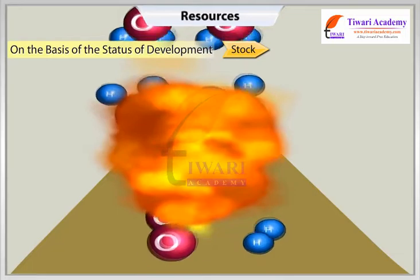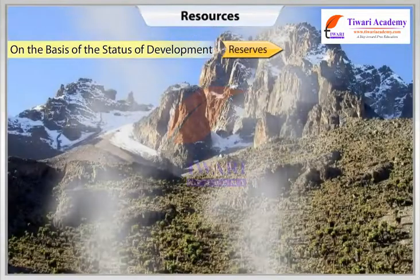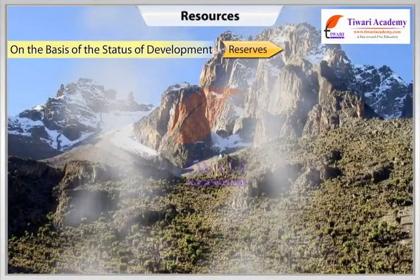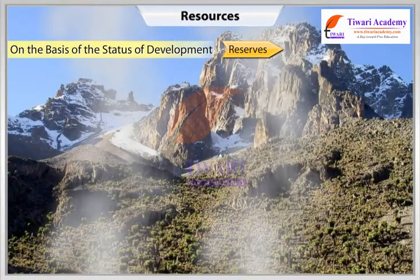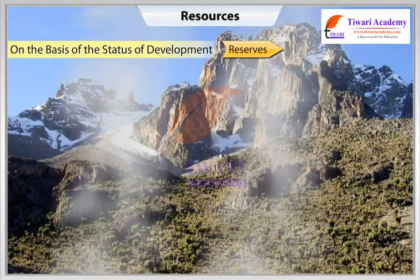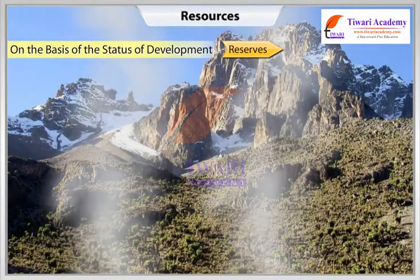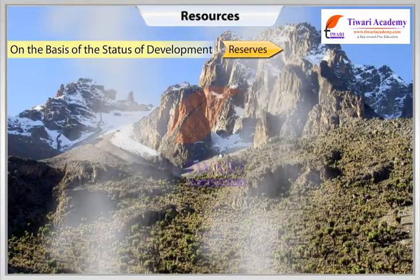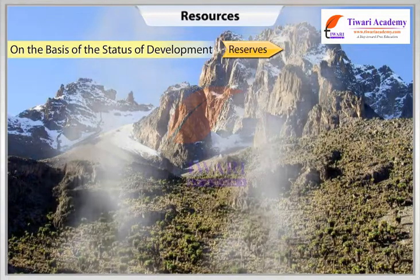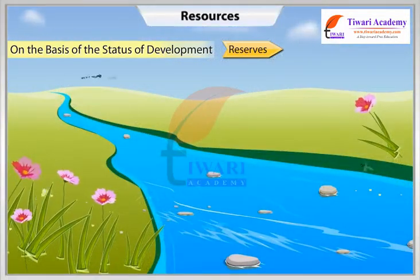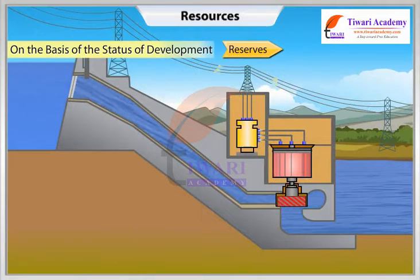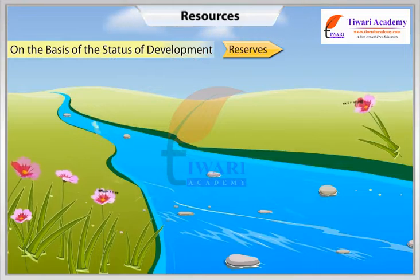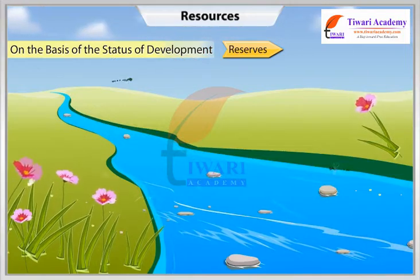Stock refers to resources where humanity lacks the required technology to use them. Reserves are a subset of stock which can be used with the help of existing technical know-how, but their use has not yet started. These can be used to meet future requirements. For example, river water can be used to generate electric power, but presently it is utilized only to a limited extent, thus the water in the river is a reserve for future use.